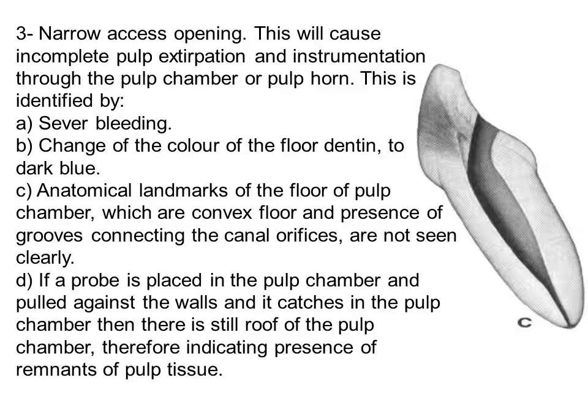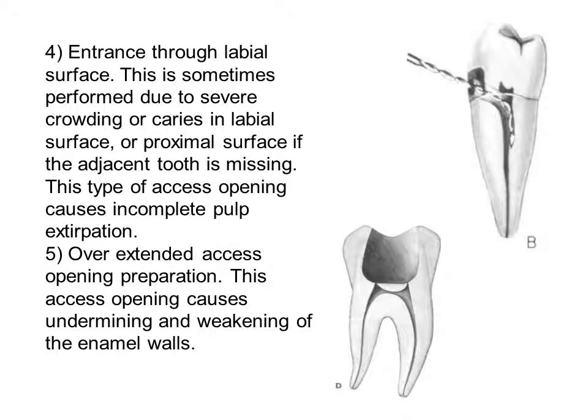Don't use a sharp instrument once you reach the pulp horn — try to use an excavator. If it is properly placed in the pulp chamber and pulled against the wall and catches, it means there is still a roof on the pulp chamber, indicating remnant pulp tissue. Introduce the probe along the long axis to try to remove it. If you catch something on the walls, it means you need to widen and diverge more to get rid of any remnant left beneath the tooth structure.